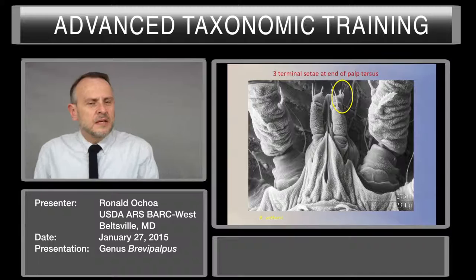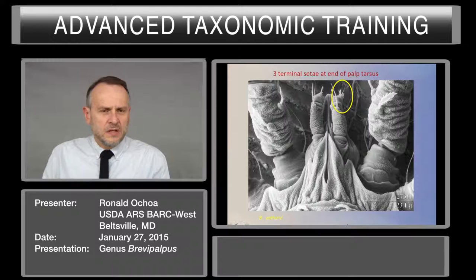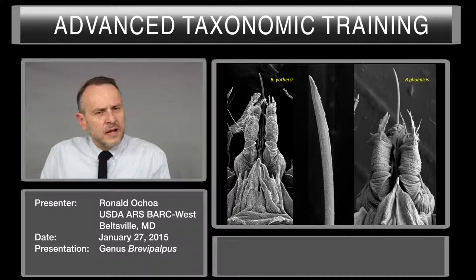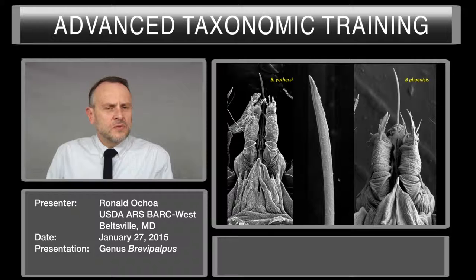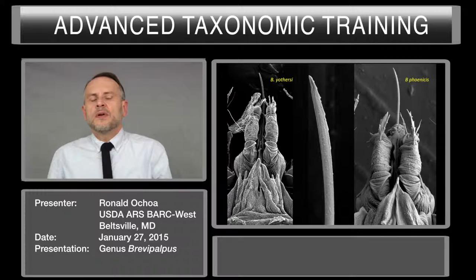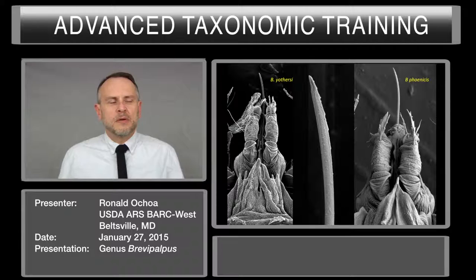The palps are linear, and the number of setae at the end of the palp are also key to separate the different groups in the genus Brevipalpus. The stylets are long and they are serrated at the end. I want to call your attention to these two photos. If we look very carefully, we'll see two species: Brevipalpus yoderi and Brevipalpus phoenicis.